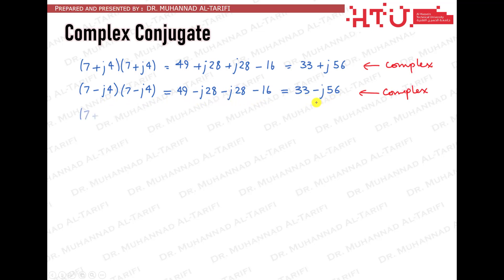However, if we multiply 7 plus j4 by 7 minus j4, then the result is a real number. Because the imaginary portions cancel each other, 7 times minus j4 cancels 7 times plus j4. This is an interesting outcome, and it is not obtained by luck.